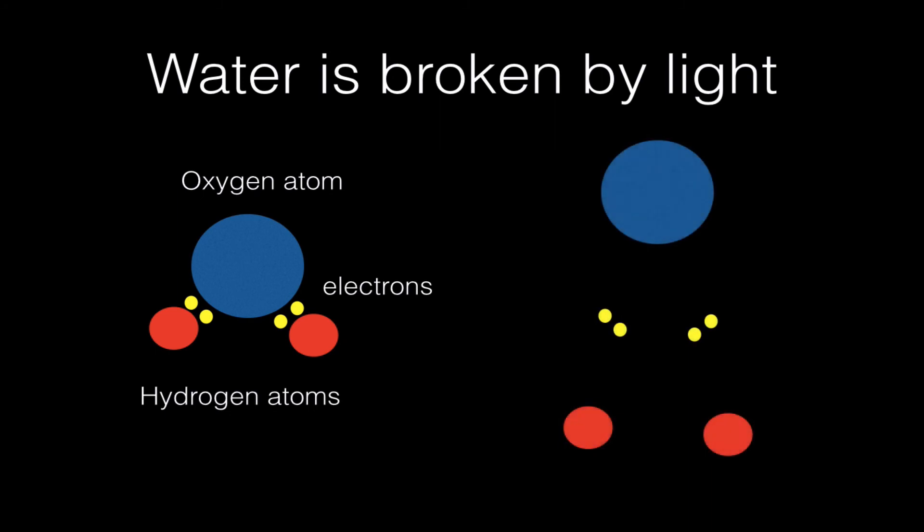And what the light reactions do is they break the water molecule down into oxygen, free electrons, and free hydrogen ions. Now because these hydrogen ions have lost their electrons, they're also known as protons or H+ ions. Now what happens is this single oxygen will combine with another one that's been broken down to produce something called O2, which is a double molecule.